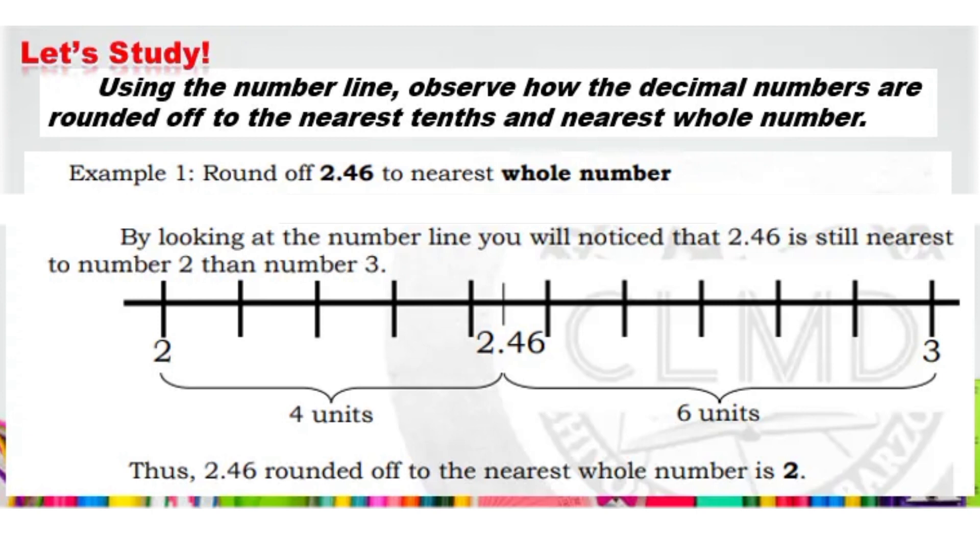Example 1: Round off 2.46 to the nearest whole number. By looking at the number line, you will notice that 2.46 is still nearest to number 2 than number 3. Thus, 2.46 rounded off to the nearest whole number is 2.